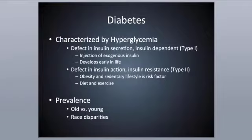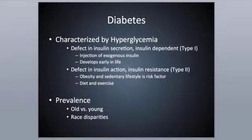Type 2 used to be called adult onset diabetes, and it still is referred to that way, but that terminology has changed a little bit. Due to our lifestyle over the past 30 to 40 years, a lot of children have become Type 2 diabetic because they're more overweight and obese and have a sedentary lifestyle. So younger individuals are now getting a disease once classified as adult only.